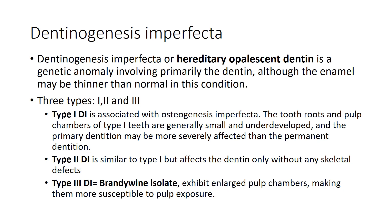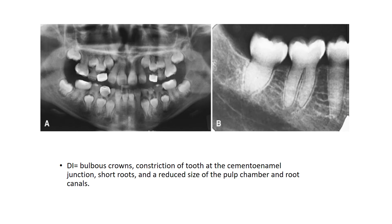Dentinogenesis imperfecta, also called hereditary opalescent dentine, is a genetic anomaly involving primarily the dentine, although enamel may also be thinner than normal. There are three types: Type 1 is associated with osteogenesis imperfecta, with small underdeveloped tooth roots and pulp chambers, and the primary dentition may be more severely affected. Type 2 is similar to Type 1 but affects dentine without any skeletal defects. Type 3 is the Brandywine isolate seen in the Brandywine region and exhibits large pulp chambers making teeth more susceptible to pulp exposure. Radiographically, features include bulbous crowns, constriction at the cementoenamel junction, short roots, and reduced size of the pulp chamber and root canals.